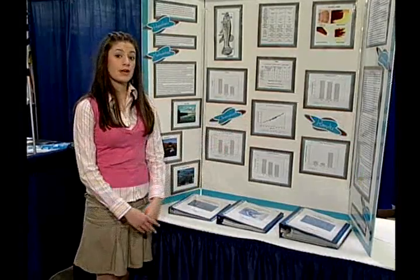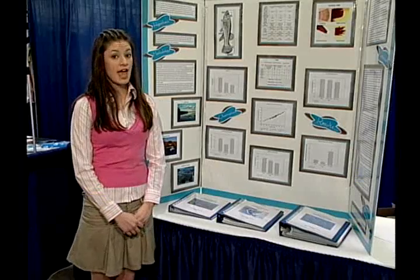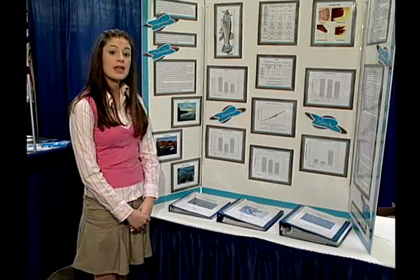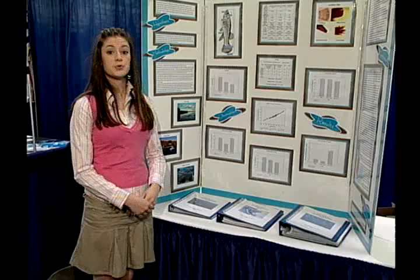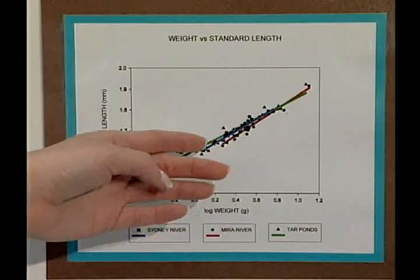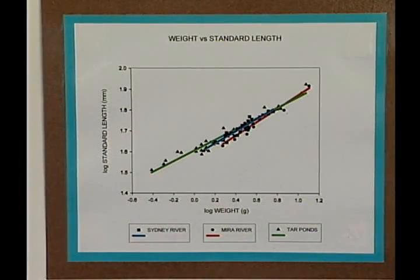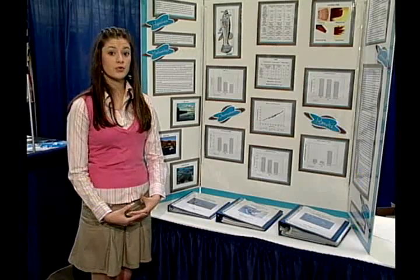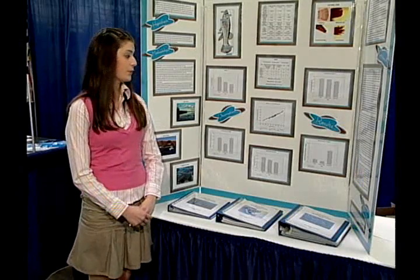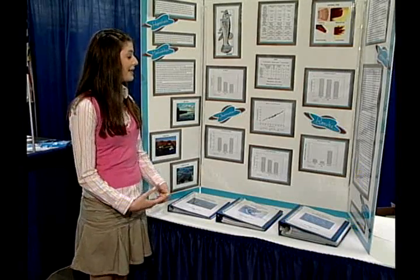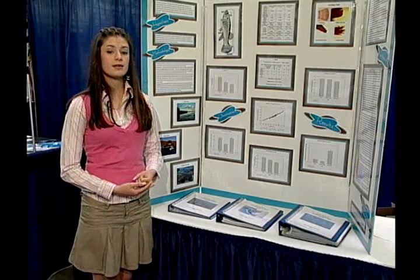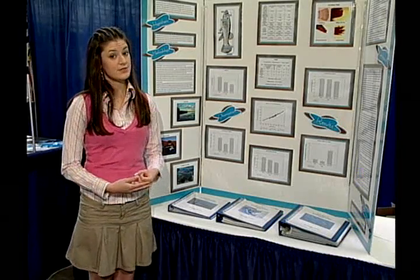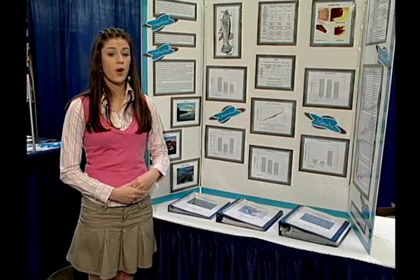I also examined the growth rates of the fish in each of the estuaries. I plotted weight versus standard length, and then took the log of each to produce a linear graph. Here you can see that Sydney River grows at a faster rate than the Sydney Tarpons, and Myra River grows at a faster rate than Sydney River. Again, I was able to rank the estuaries: Myra River received a 3, Sydney River received a 2, and the Sydney Tarpons received a 1.